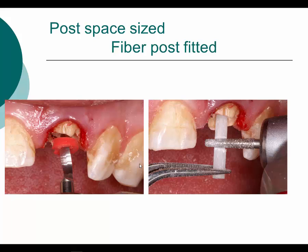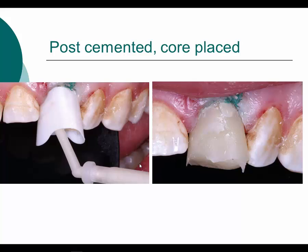We do the composite post and core before the crown lengthening, then perform the crown lengthening once the provisional is placed. With all fiber posts, when sizing them use a diamond to get the correct size and length — do not use a fluted bur, as a fluted bur will cause the glass fibers to shatter. I cement the post in place and then do my composite core using a dual-cure, tooth-colored composite core material.